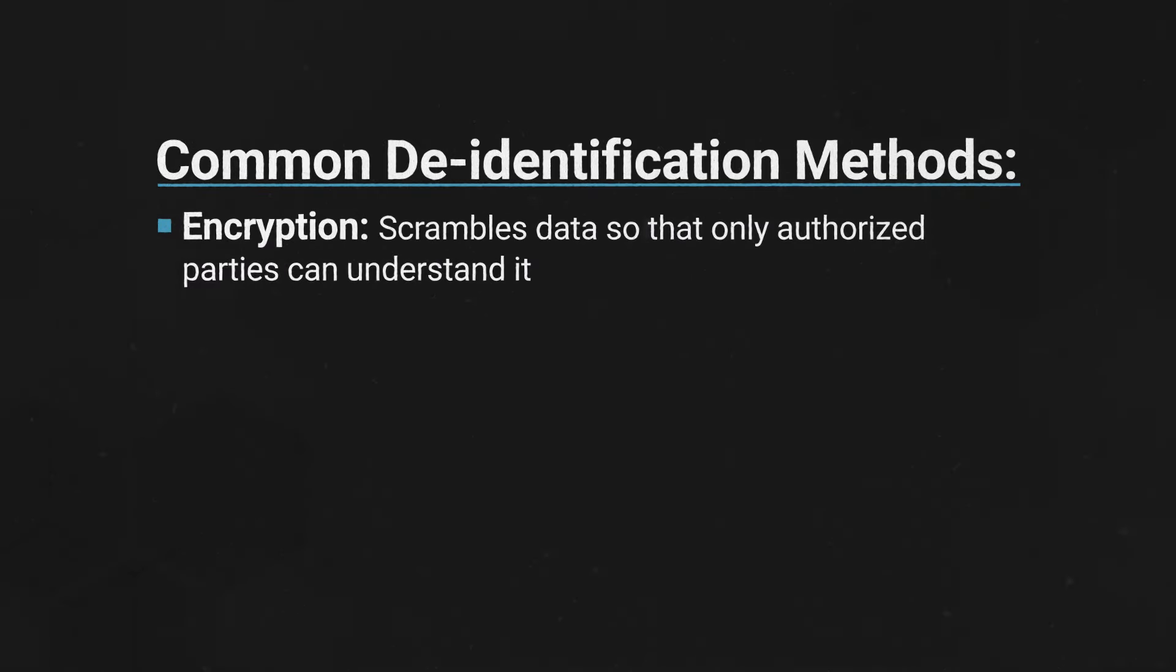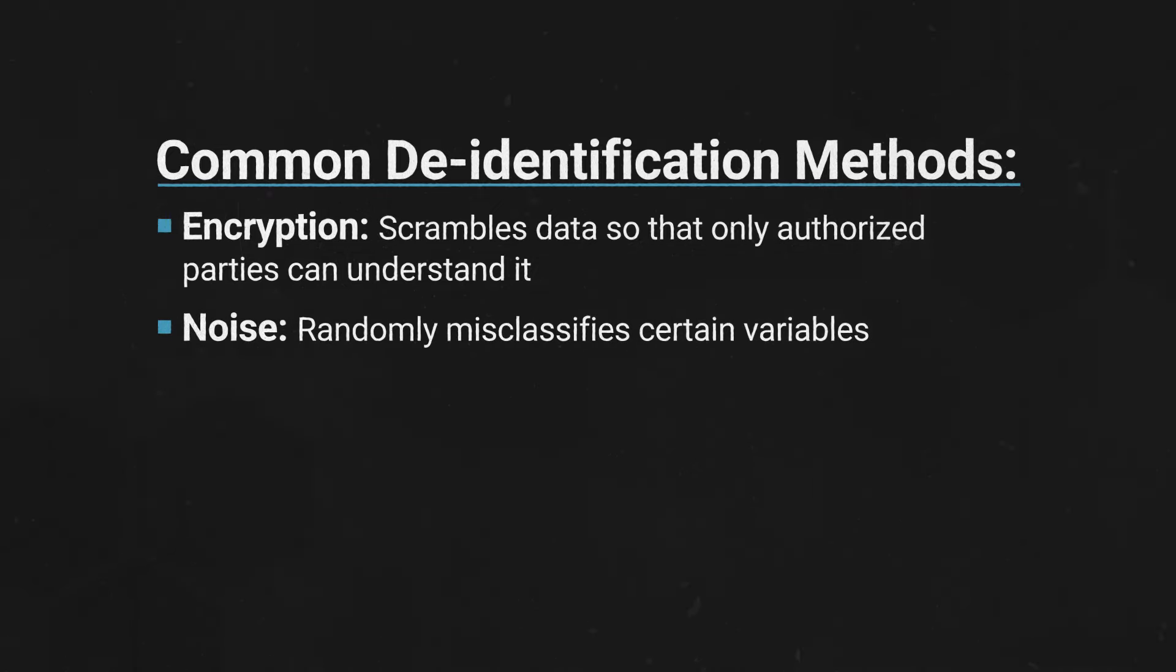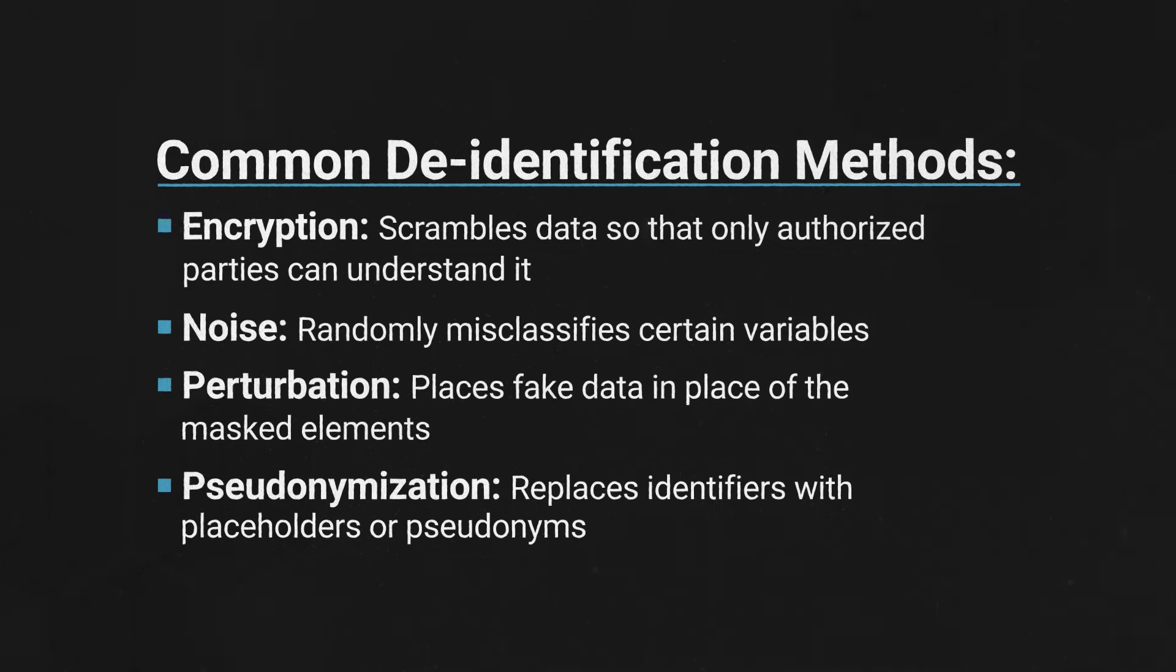From here, one of several de-identification techniques can process the data and mask different elements. Common de-identification methods include encryption, which scrambles data so that only authorized parties can understand it; noise, which randomly misclassifies certain variables; perturbation, which places fake data in place of the masked elements; and pseudonymization, which replaces identifiers with placeholders or pseudonyms.